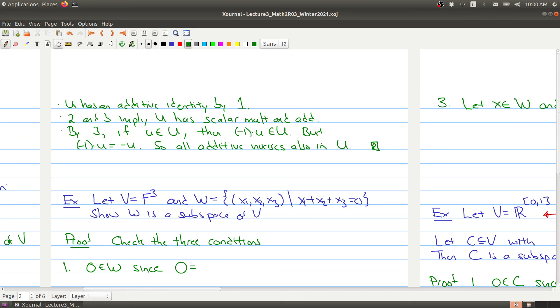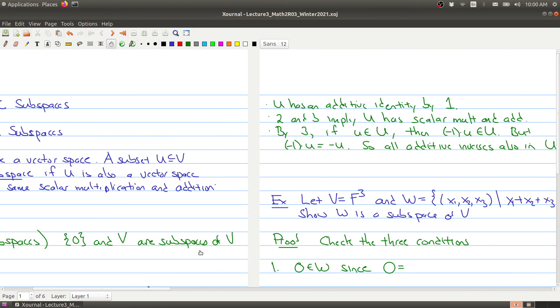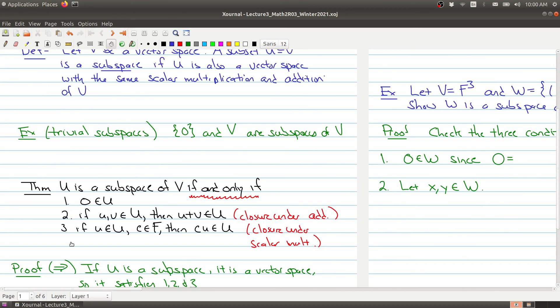So now, if you go back to the previous section and you look at the list of axioms, we've now checked that all the axioms for a vector space are satisfied by U. And in particular, we need statements 1, 2, and 3 to kind of allow us to make sure that all the properties of a vector space are satisfied.